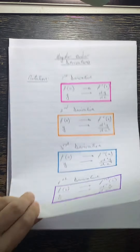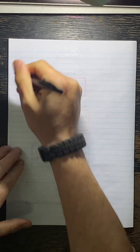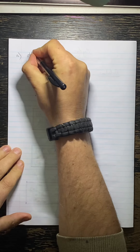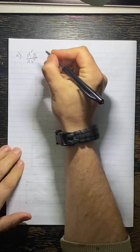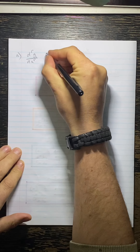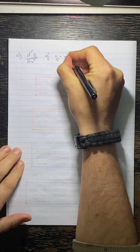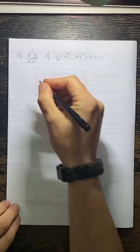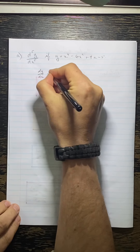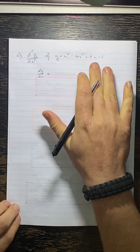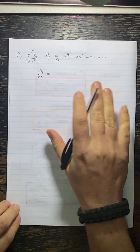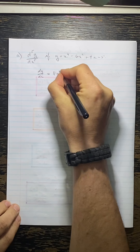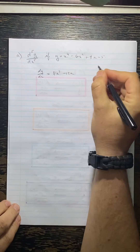Let's go through some examples. The first example: they're asking us to find d⁵y/dx⁵ — in other words, the fifth derivative — if y equals x⁴ minus 6x² plus 9x minus 5. Because it's given in the y form, I'll use dy/dx for the first derivative. Whenever you take the derivative, make sure it's in polynomial form. So the first derivative gives us 4x³ minus 12x plus 9.